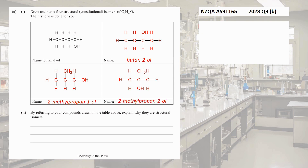For the fourth possible isomer, I can't change the backbone structure anymore, but I can move the OH so it comes off the middle carbon. Because it's attached to the middle carbon this is actually a tertiary alcohol — 2-methylpropan-2-ol. So these are the four different structures. For structural isomerism, finding all possibilities and eliminating any duplicates is one of the most challenging parts for students; you really have to practice.